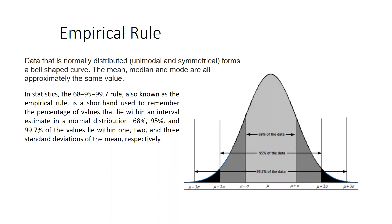What do you mean by the empirical rule? What is the meaning of mean minus 1 standard deviation, mean minus 2 standard deviations, and mean minus 3 standard deviations? What do you mean by 68% of the data, 95% of the data, and 99.7% of the data?